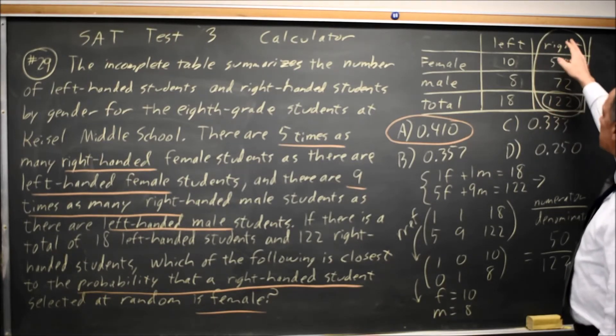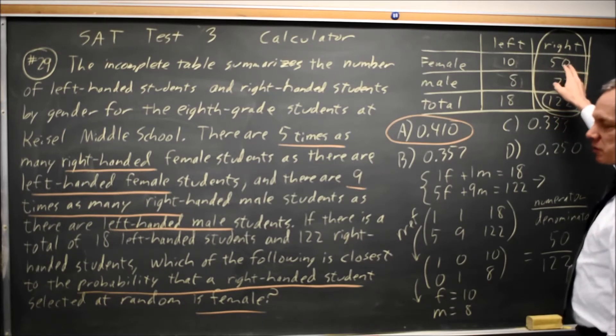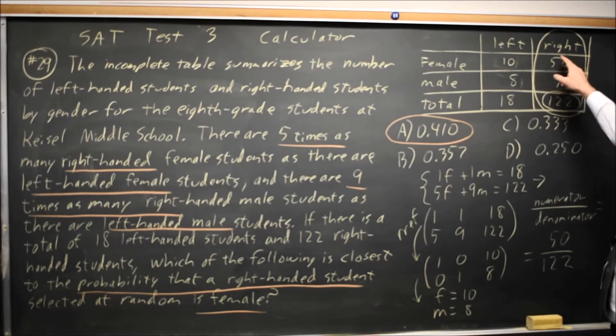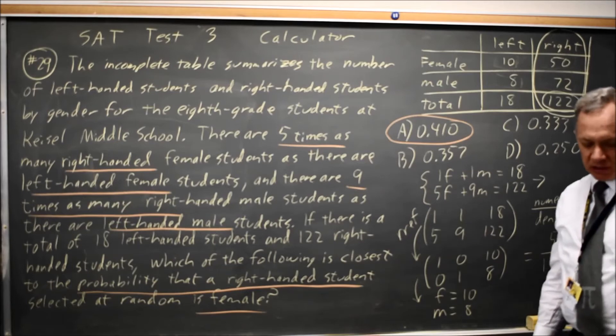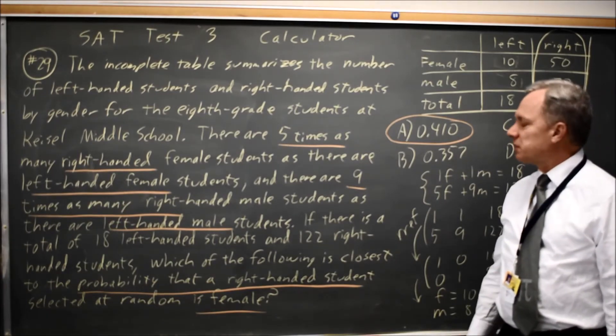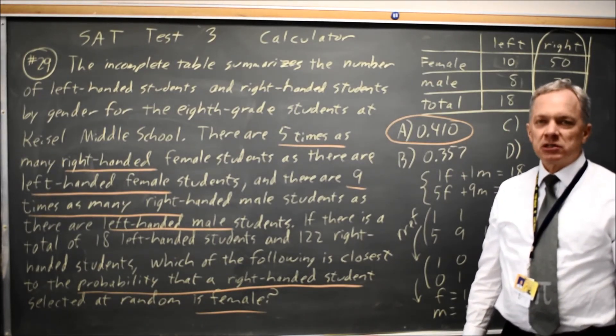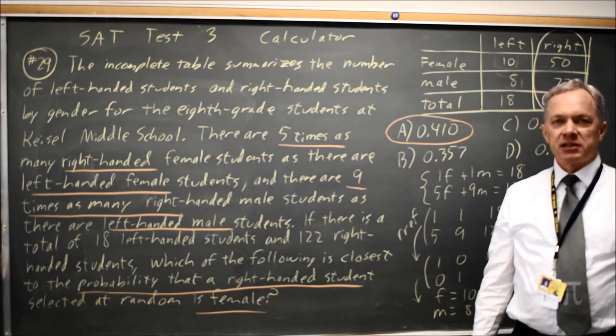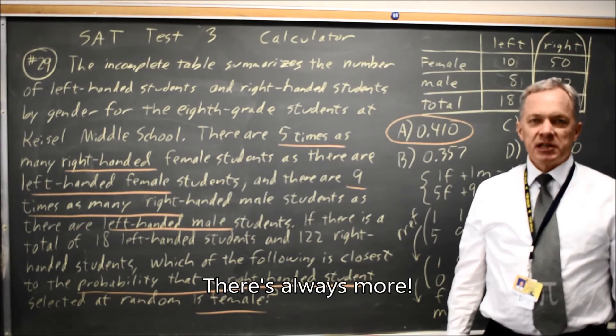that a right-hand student selected at random, that's all 122 right-handers, is female. That's the 50 out of 122 that are female, and that was .410. So choice A was the correct answer. Come back soon for my next math video. With math, there's always more.